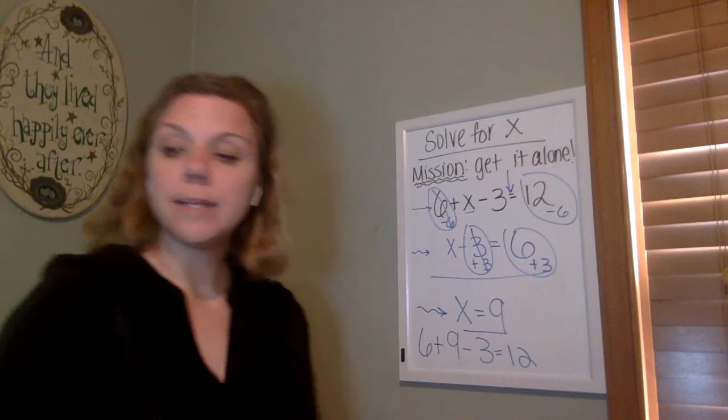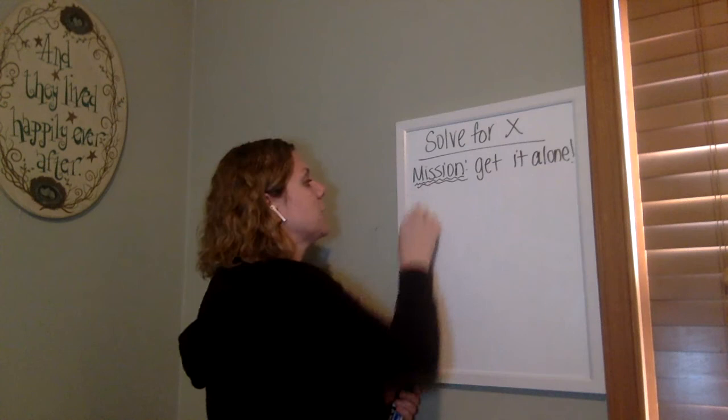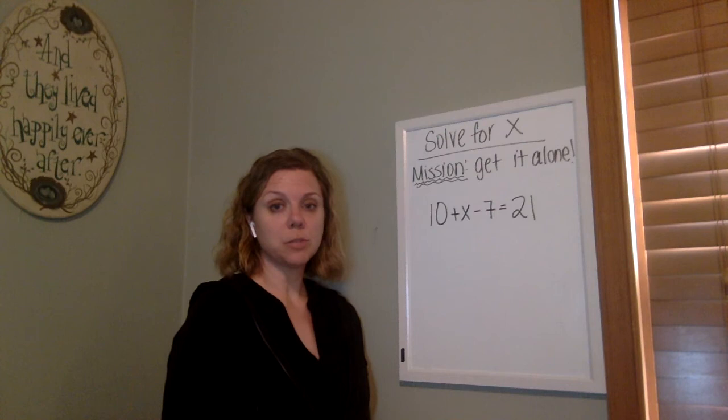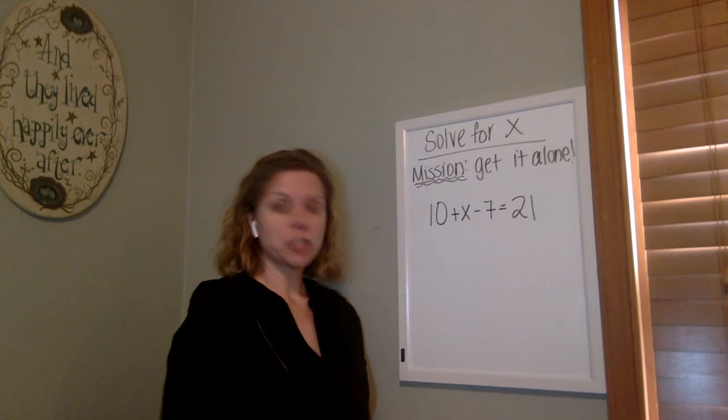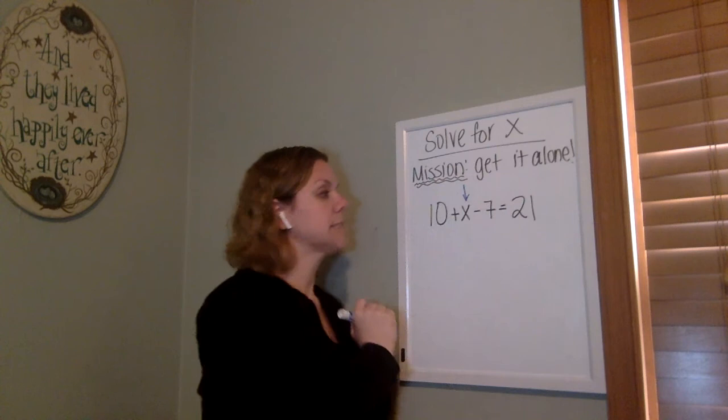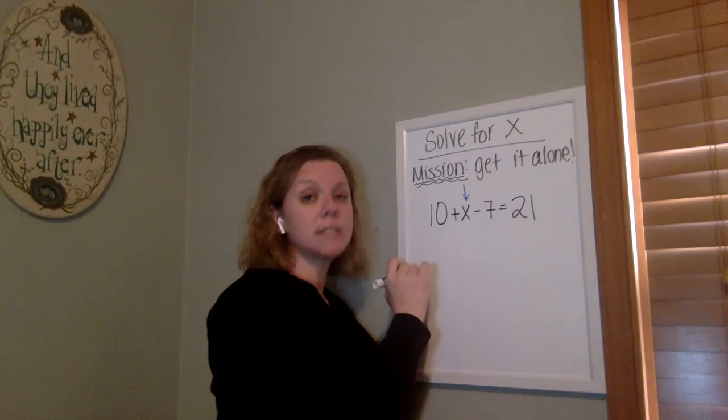So get a piece of paper and a pencil or a little whiteboard if you have one. I want you to work through the next one with me. I know this is kind of new. I want you to work through the next one with me and see if you can get it. All right. So write this one down. If you have a way to write it down, we have 10 plus x minus seven equals 21. All right. So I need, it doesn't really matter which number I start with. Actually, I could start with either one, whatever you feel is a little bit easier for you to do.